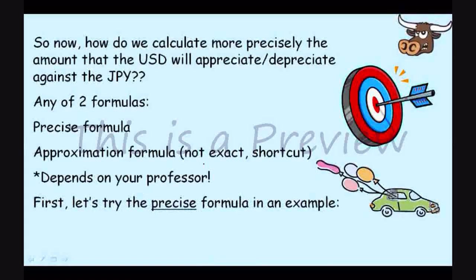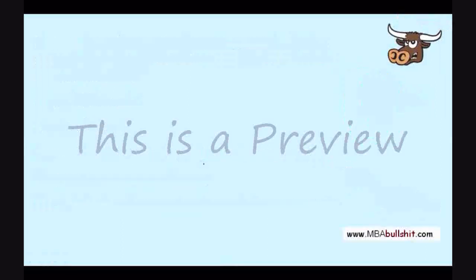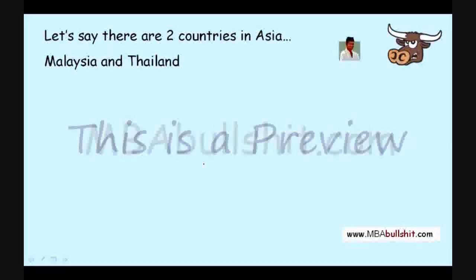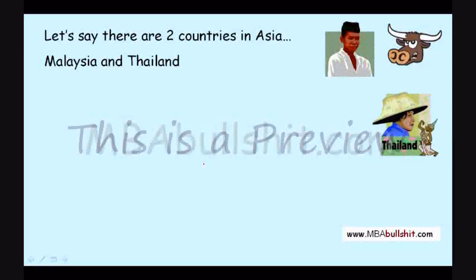So for us, let's first try the precise formula — it's quite easy. Afterwards, I will show you how to use the approximation formula. Let's use this example: let's say there are two countries in Asia, Malaysia and Thailand.